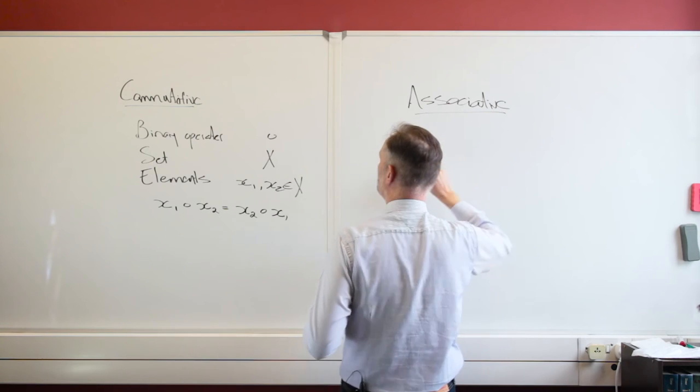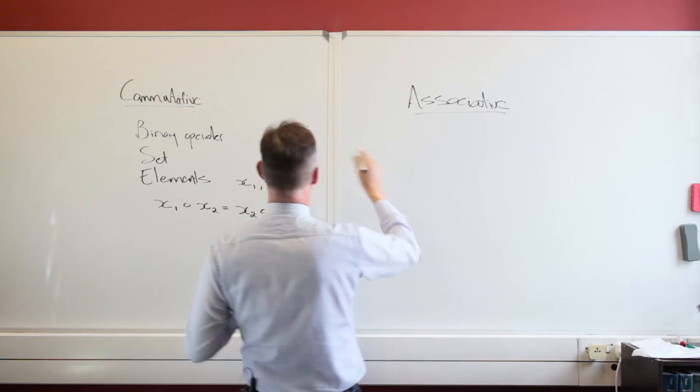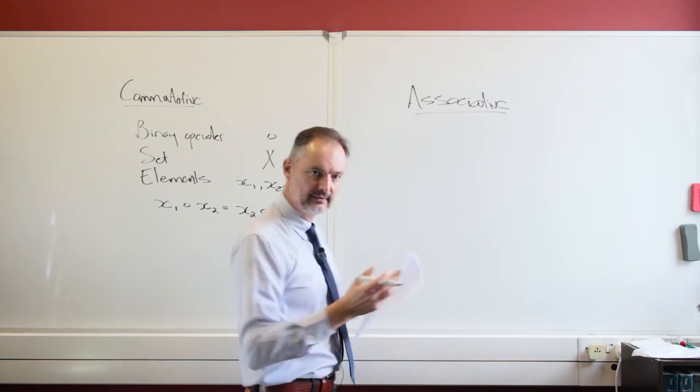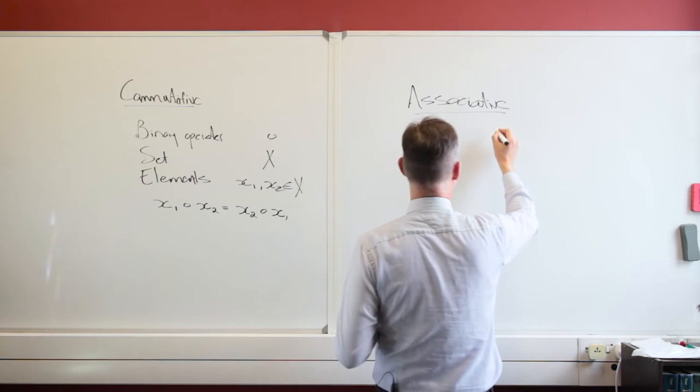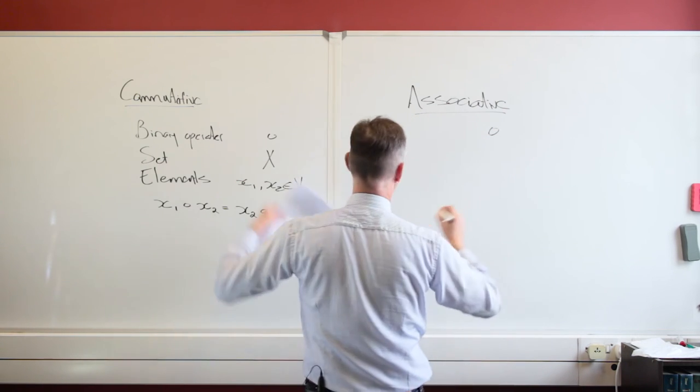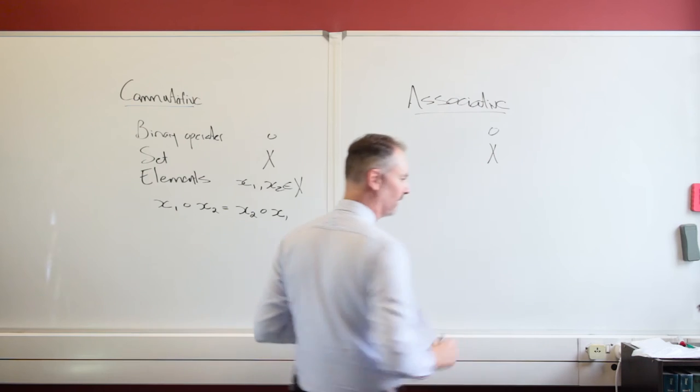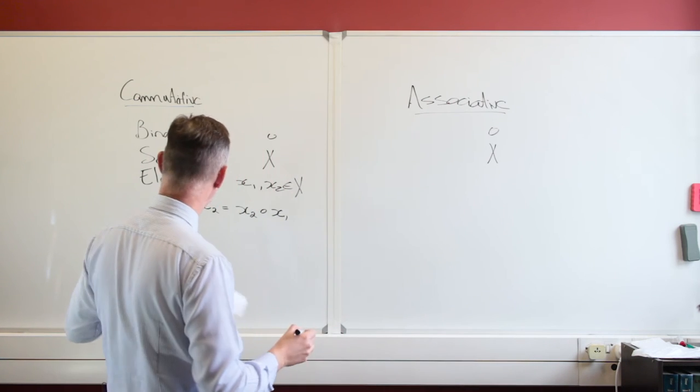So this associative type of binary operator. Our binary operator is still just going to be this. Our set is still going to be our set of elements, and we call that set X.